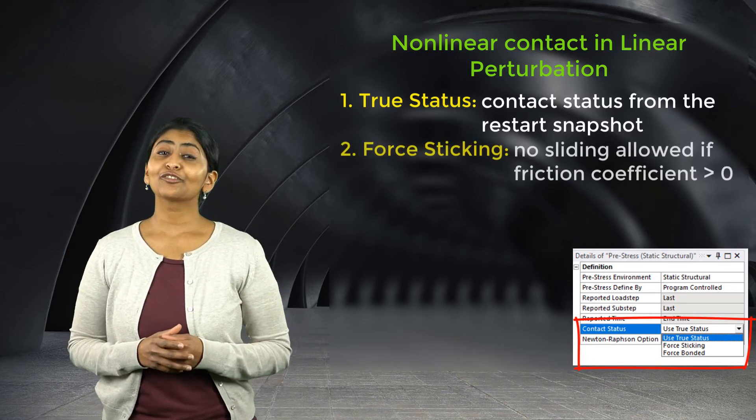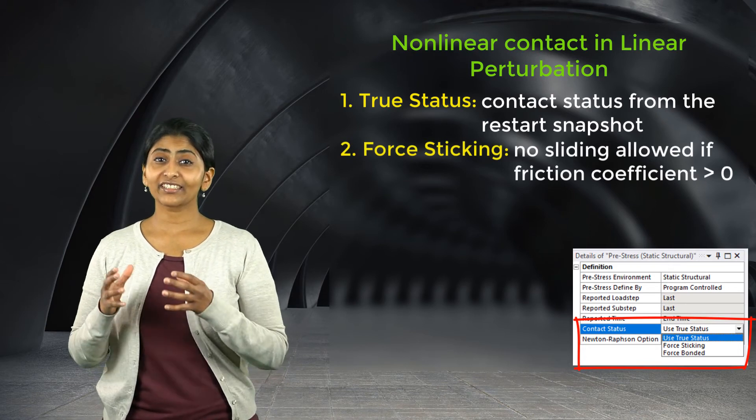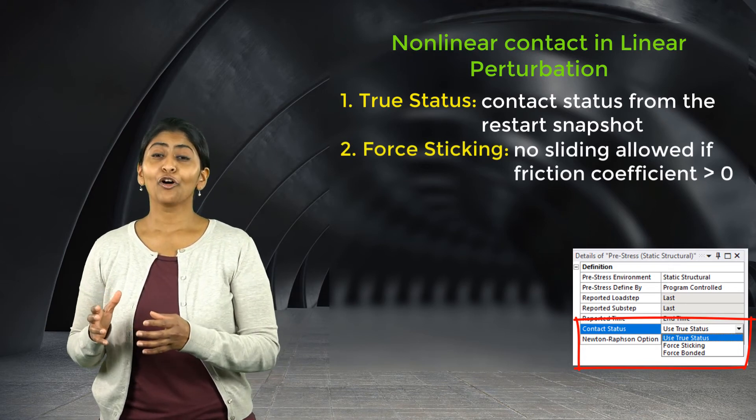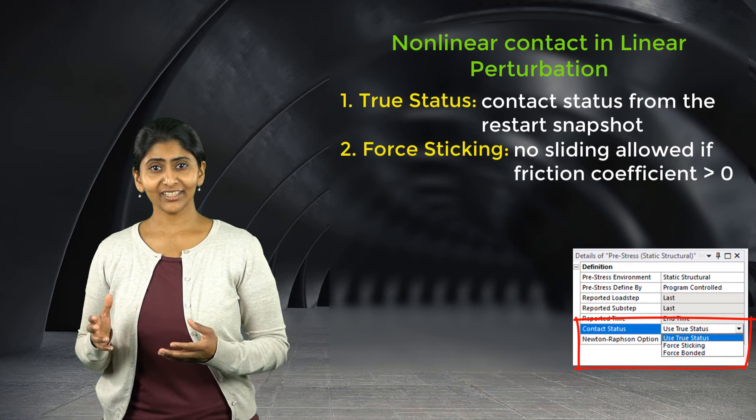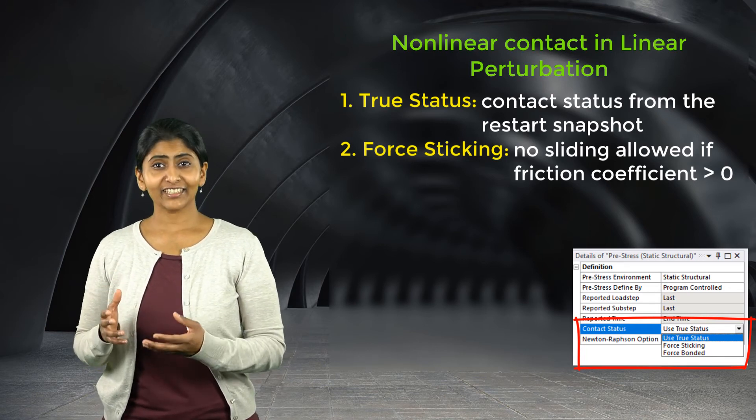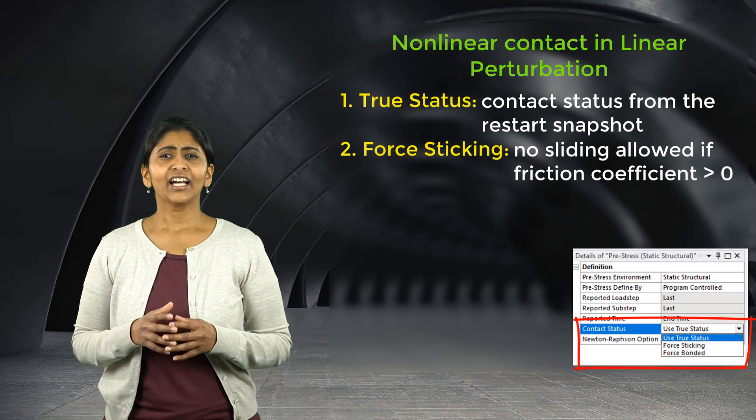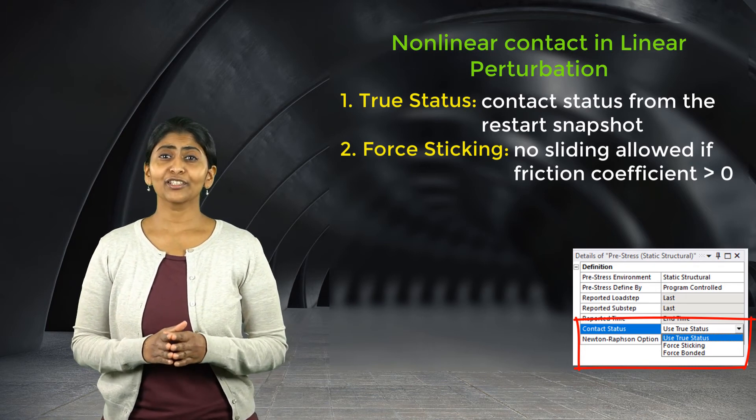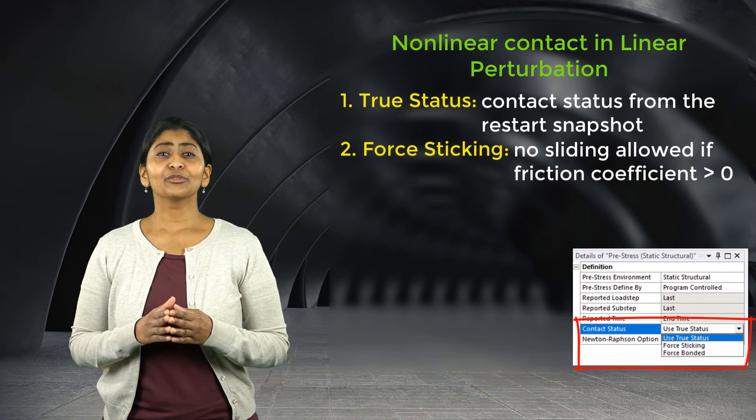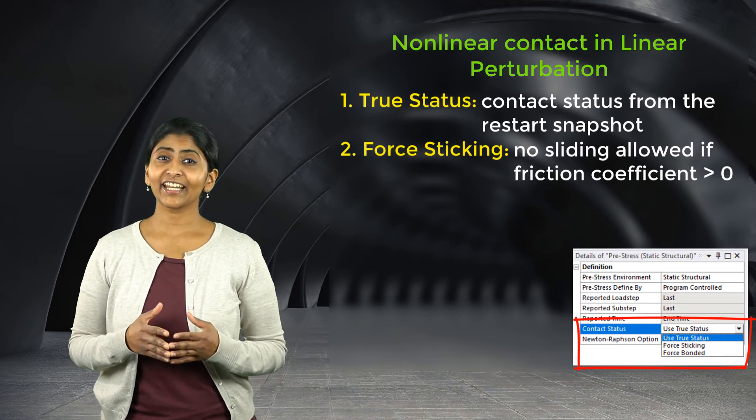The second option is force sticking, which uses sticking contact stiffness for the frictional contact pairs even when the status is sliding—that is, no sliding status is allowed. This option only applies to contact pairs whose frictional coefficient is greater than zero.